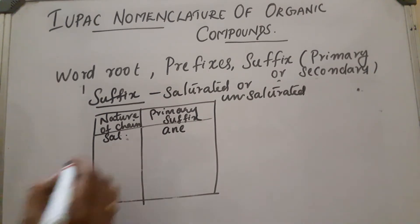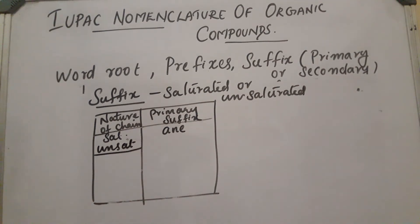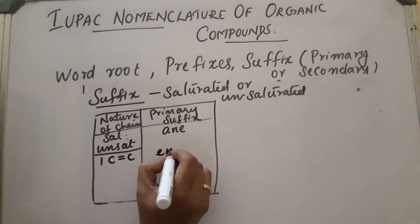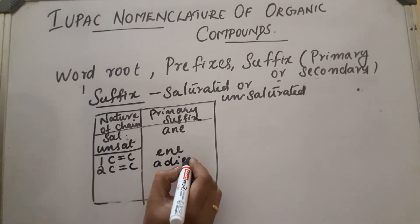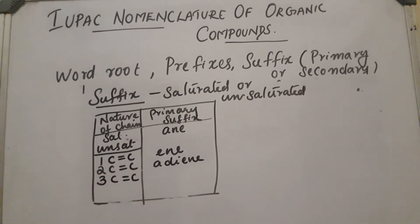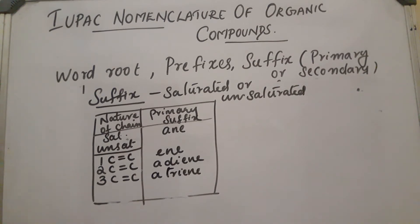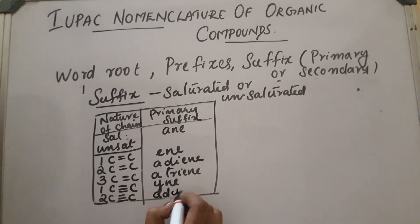If the compound is unsaturated, it may contain one C=C double bond, in which case the suffix is 'ene.' If there are two C=C double bonds, it is called a 'diene.' Three C=C double bonds give a 'triene.' If there is one C≡C triple bond, the suffix is 'yne.' Two triple bonds give a 'diyne.'